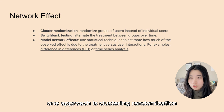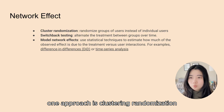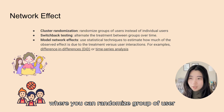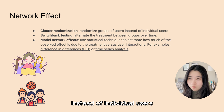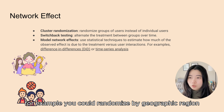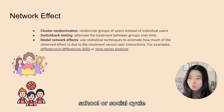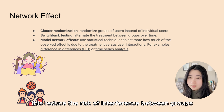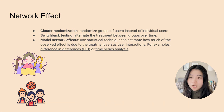One approach is cluster randomization, where you randomize groups of users instead of individual users. For example, you could randomize by geographic region, school, or social circle. This reduces the risk of interference between groups.